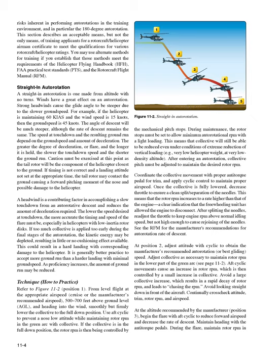Straight-in autorotation: A straight-in autorotation is one made from altitude with no turns. Winds have a great effect on an autorotation. Strong headwinds cause the glide angle to be steeper due to the slower ground speed. For example, if the helicopter is maintaining 60 KIAS and the wind speed is 15 knots, then the ground speed is 45 knots. The angle of descent will be much steeper, although the rate of descent remains the same.